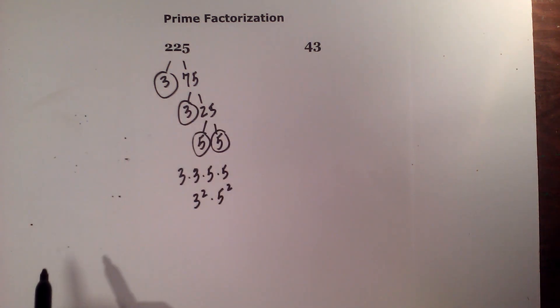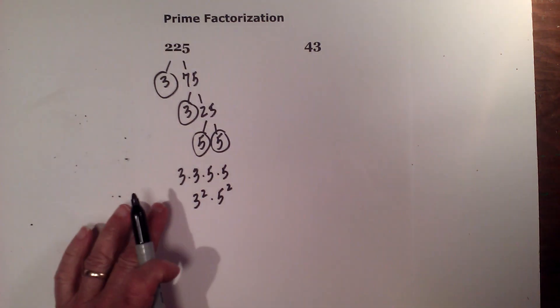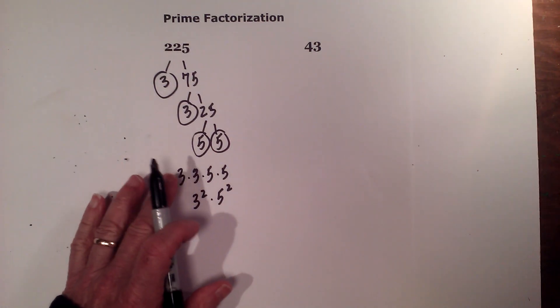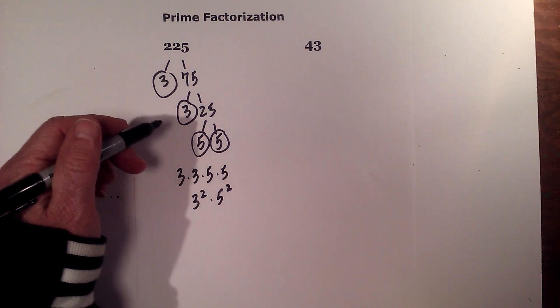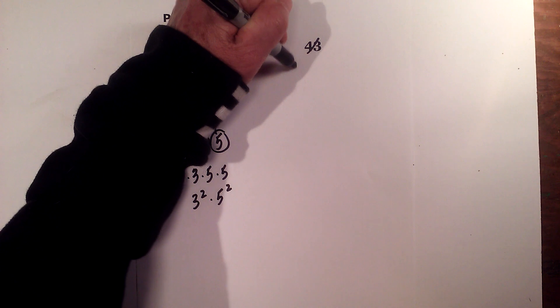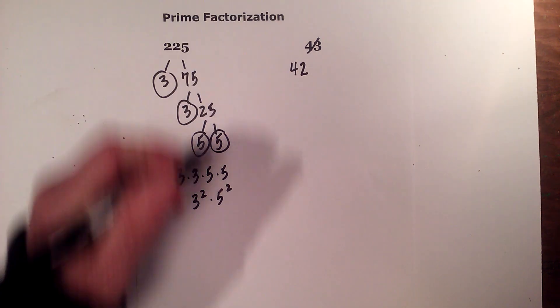Okay, next I have the prime factorization of 43. Well, this will not take long. 43 is prime, so there's nothing I can do. So why don't we just subtract one and we'll make it 42 instead.